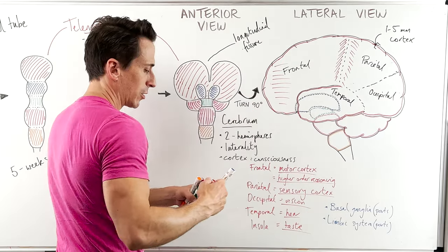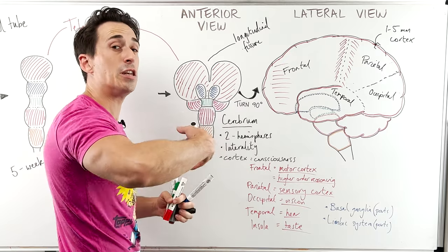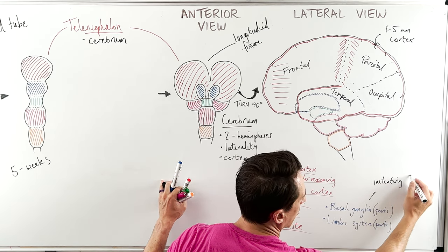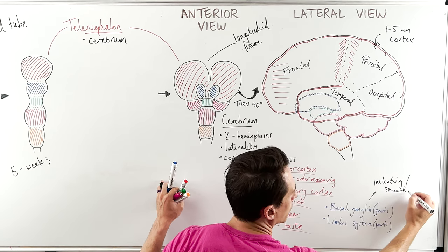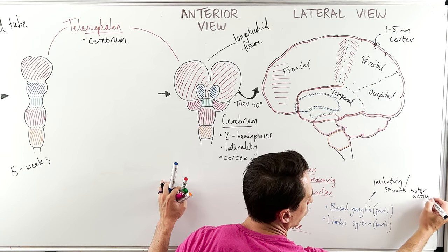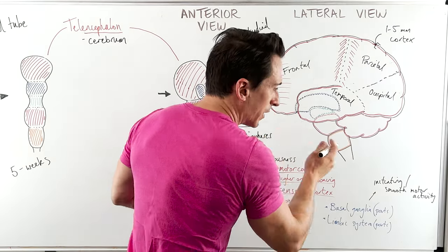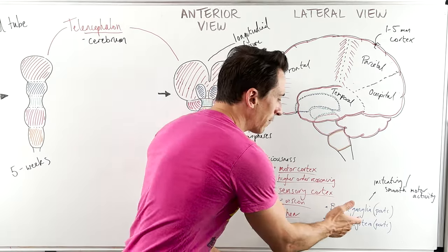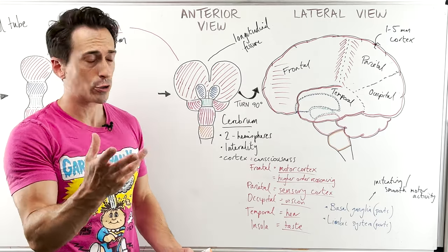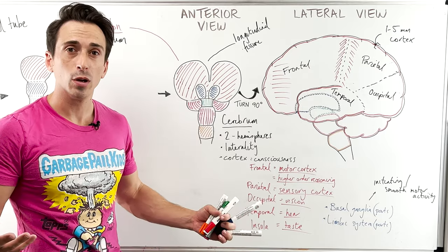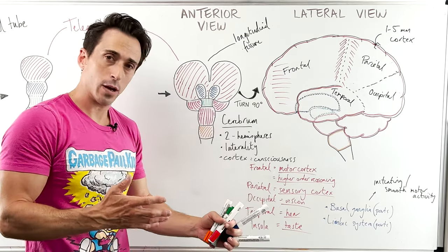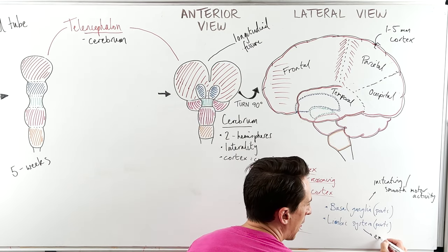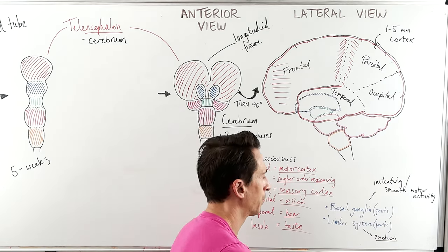What do the basal ganglia and limbic system do? The basal ganglia is important for initiating and smoothing out motor activity. An example: if I want to walk and walk smoothly, that's the basal ganglia smoothing that out. People who have deficits in the basal ganglia — specifically dopamine, the neurotransmitter used here — find it hard to initiate a movement and also have a resting tremor, so they don't have that smooth movement. The limbic system is really important in emotion, among other things.